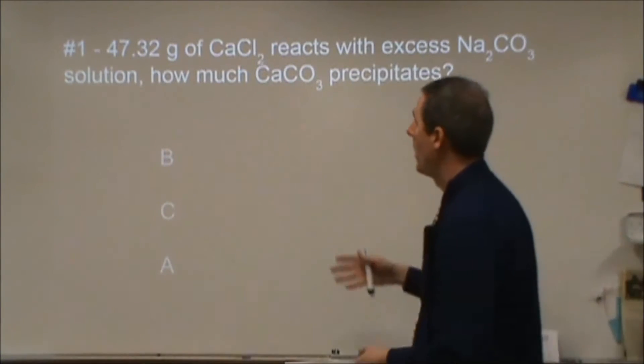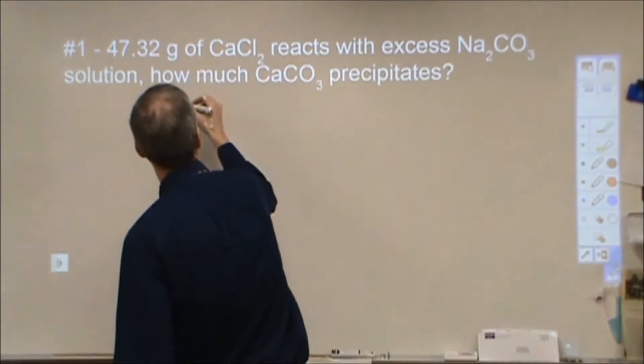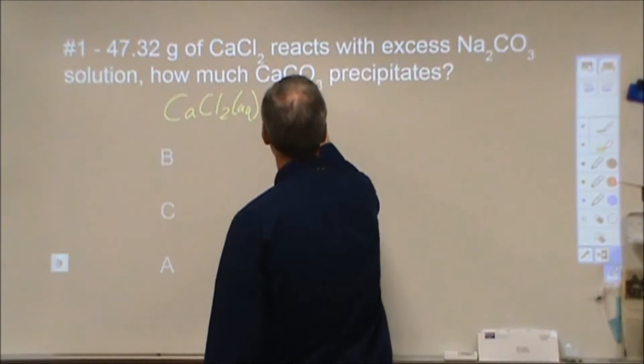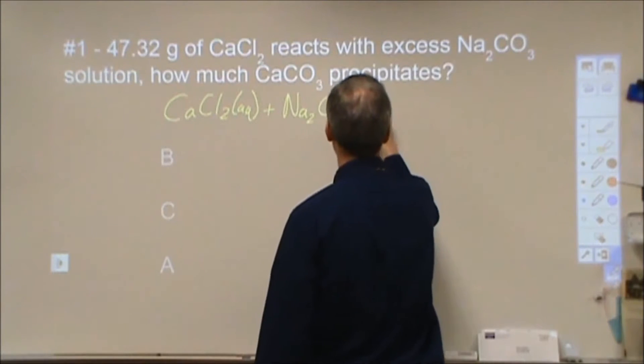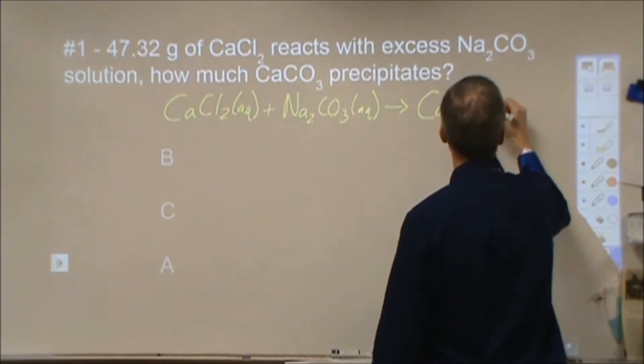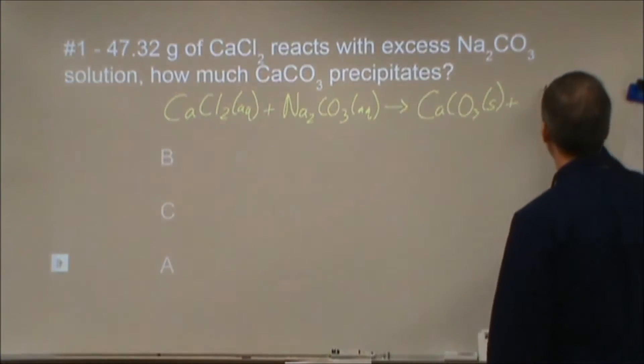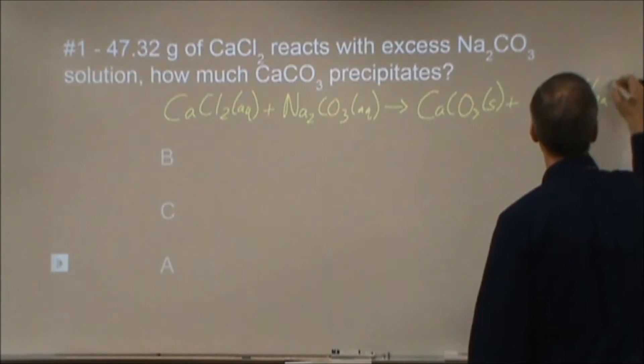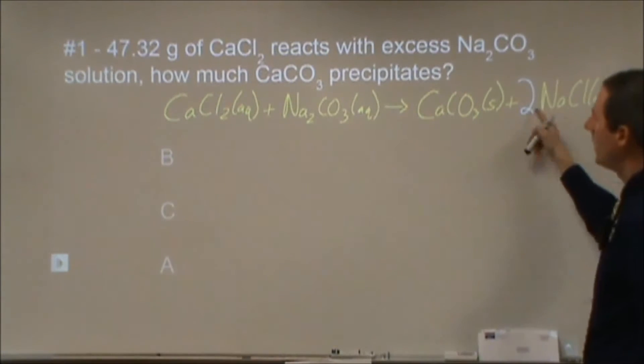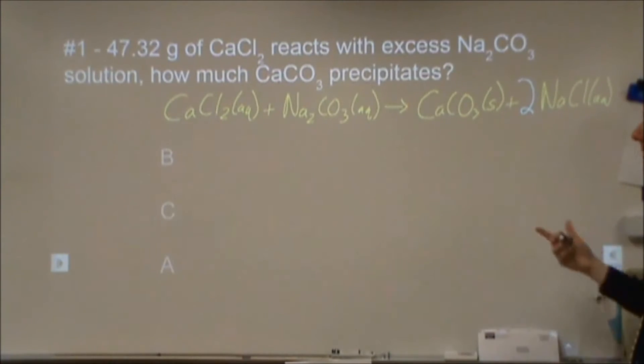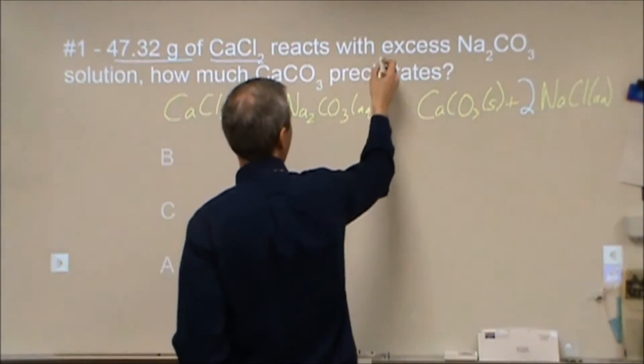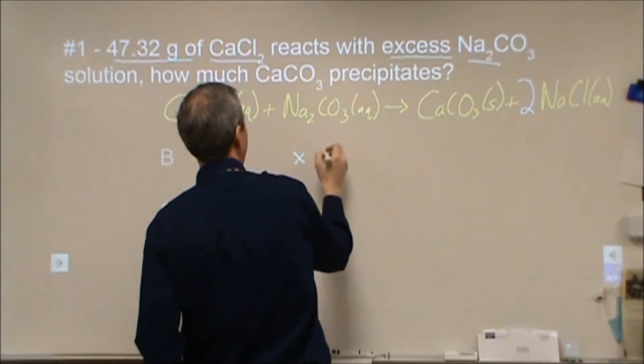I'm going to go ahead and start solving this. We have calcium chloride reacting with excess sodium carbonate. So we have CaCl2 in solution plus Na2CO3 in solution, producing calcium carbonate. It says precipitates because that's insoluble salt, and the last thing we're going to make is NaCl in solution. To balance this, the only thing we need is a 2 here to balance the sodiums and the chlorides. So here's our balanced reaction.